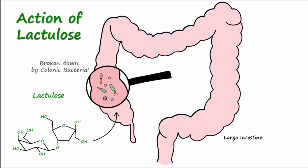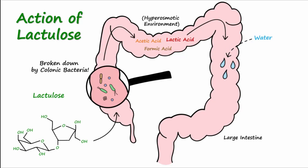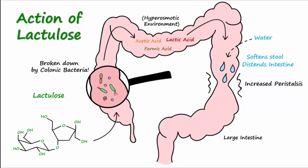In the large intestine, lactulose is broken down by colonic bacteria into acetic acid, formic acid, and lactic acid. This action creates a hyperosmotic environment inside the lumen of the large intestine, which acts to draw water into the lumen. This added water softens the stool and also distends the intestine, which leads to an increase in peristalsis or gut motility and gets things moving.